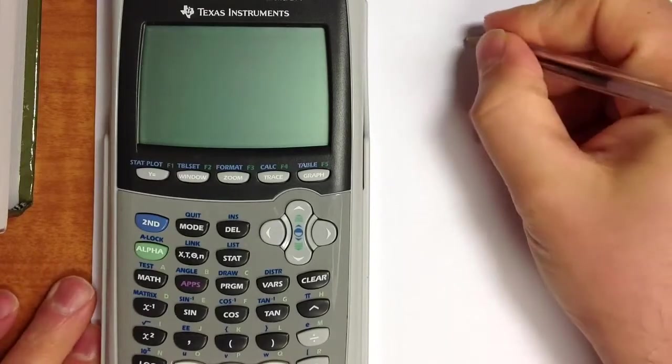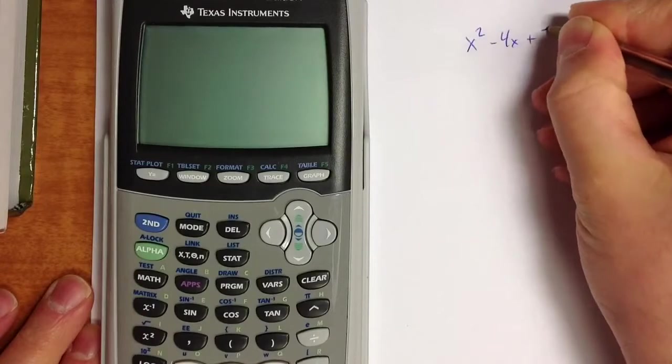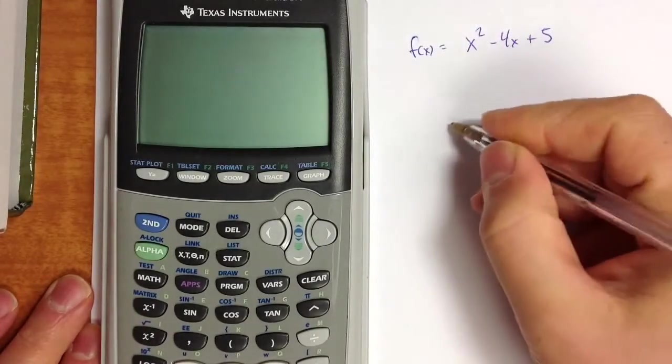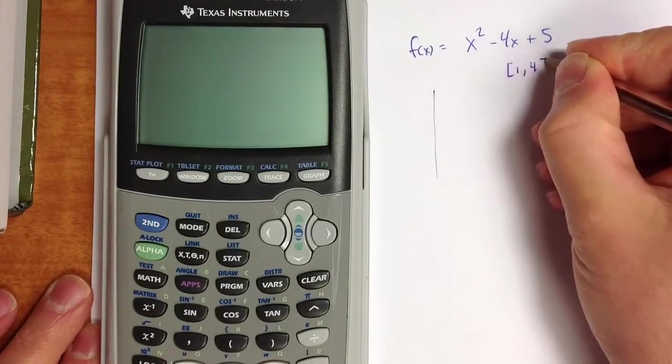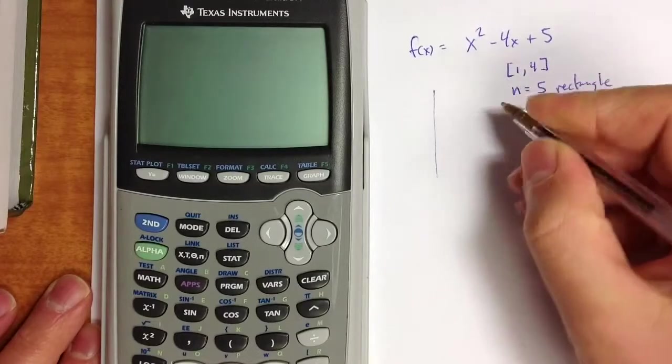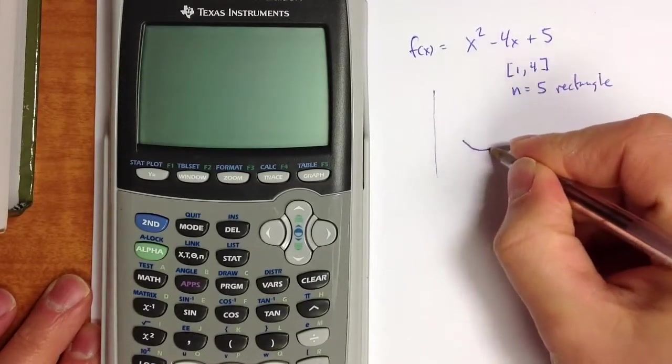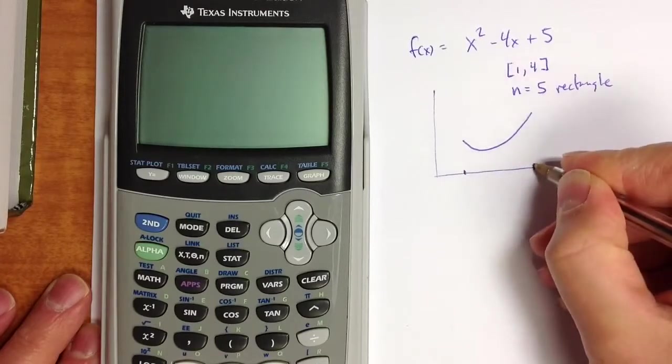Suppose you have a function x squared minus 4x plus 5, and we want to measure the area under this function on the interval from 1 to 4 using 5 rectangles. The function is a parabola. On the interval from 1 to 4, it looks something like that.